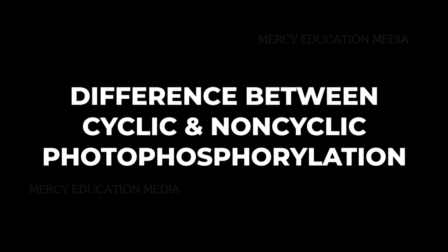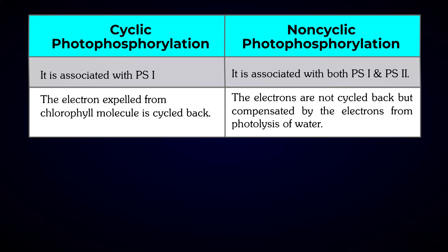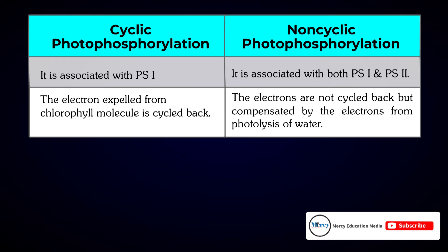Let us know the differences between cyclic and non-cyclic photophosphorylation. Cyclic photophosphorylation is associated with PS1, whereas non-cyclic photophosphorylation is associated with both PS1 and PS2. In cyclic photophosphorylation, the electron expelled from the chlorophyll molecule is cycled back. In non-cyclic photophosphorylation, the electrons are not cycled back but are compensated by the electrons from the photolysis of water.